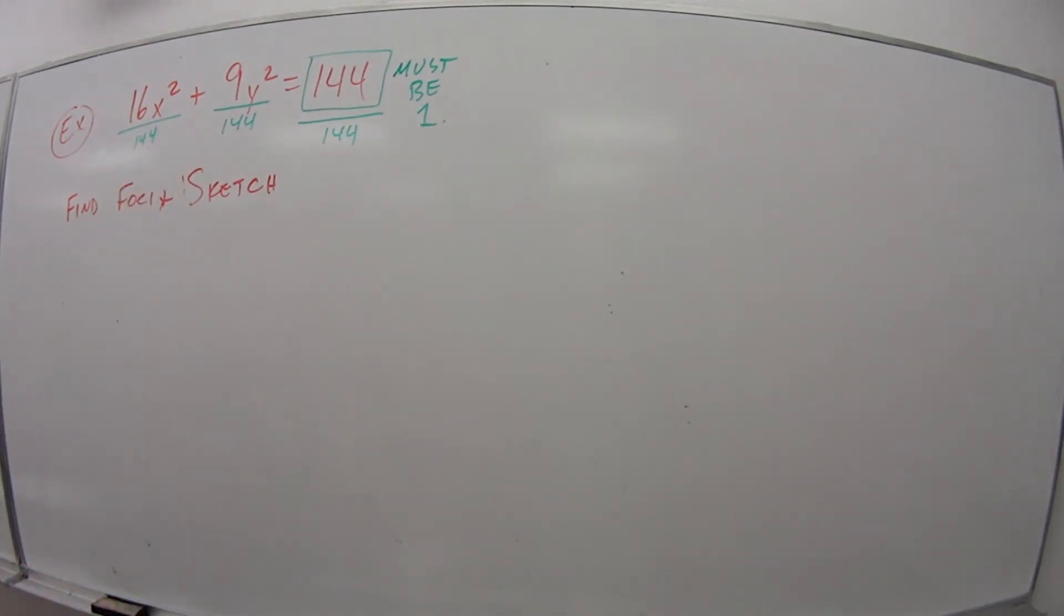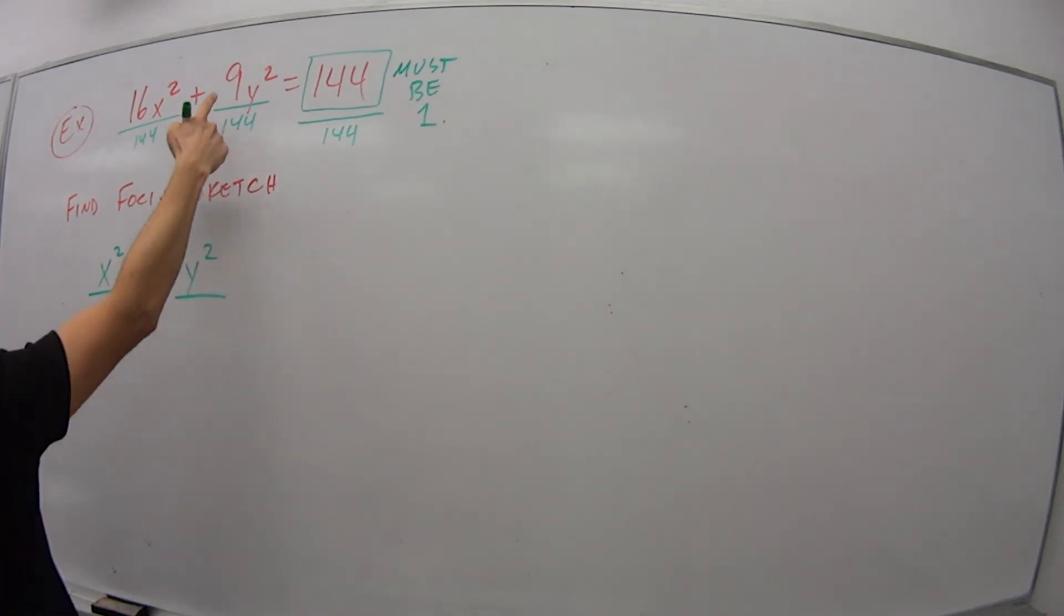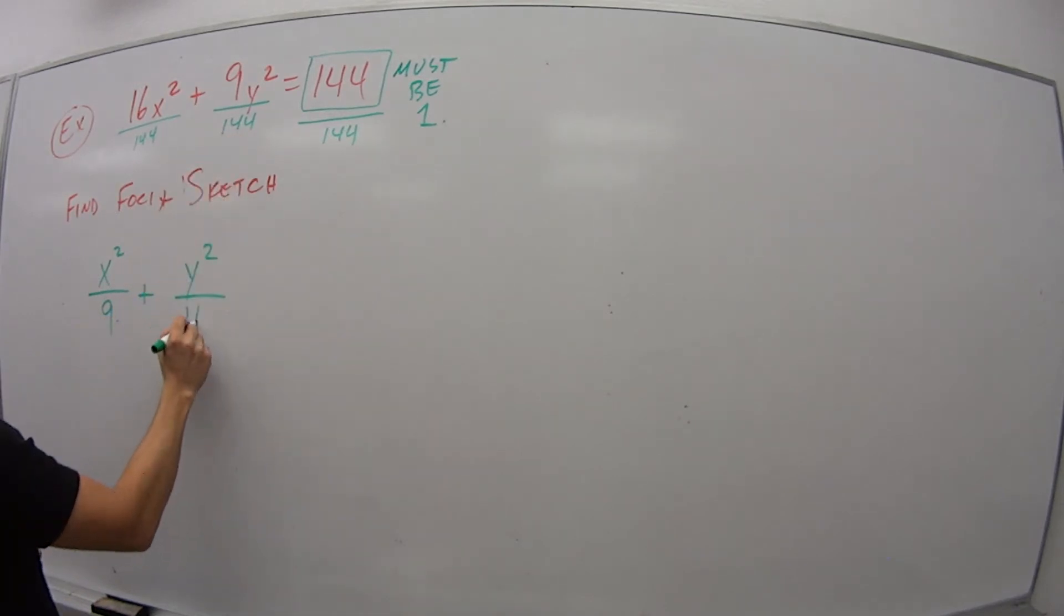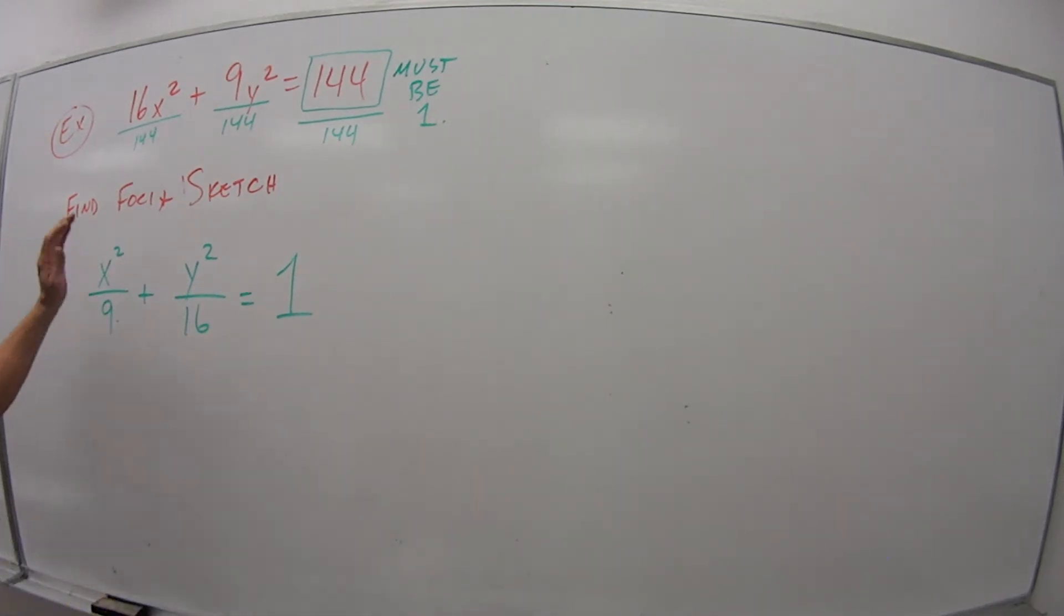So how do I get that to be equal to 1? I need to divide this by 144. So when I do that, the new equation I get is x squared, 16 goes into 144 9 times, plus y squared, 9 goes into 144 16 times, equals 1. So now that I've done this, if this was the exam, that would be the first step I have to do.